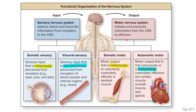The motor system can be divided into the somatic motor system and the autonomic system. Just as with the sensory, the somatic motor nervous system includes output that's conscious or voluntary. You will recall from our discussion of skeletal tissue that skeletal muscle is under voluntary control and is the primary effector of the somatic motor system.